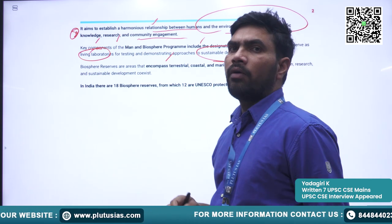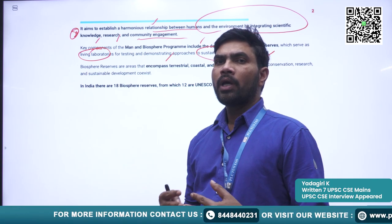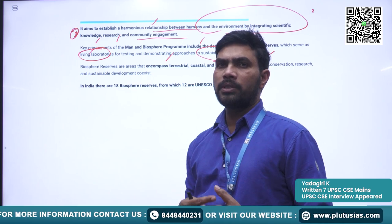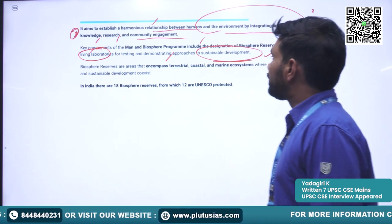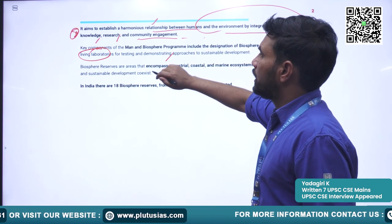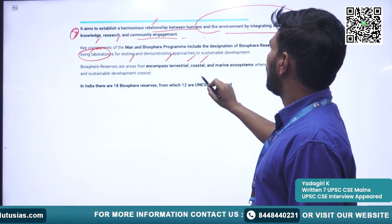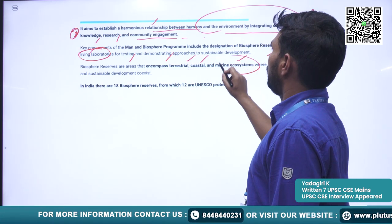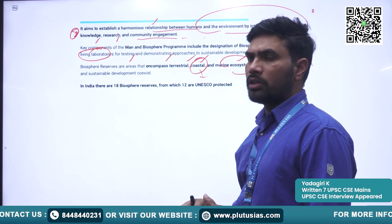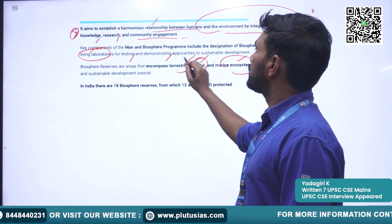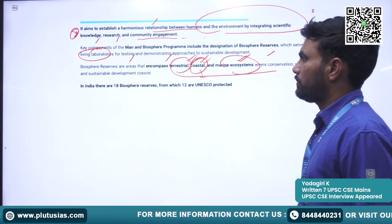These are areas where wildlife and human beings coexist harmoniously, not obstructing each other's activities or growth. The Biosphere Reserves encompass terrestrial, coastal, and marine ecosystems — coastals being where the land and marine environments meet. It encompasses these three kinds: terrestrial, coastal, and marine.